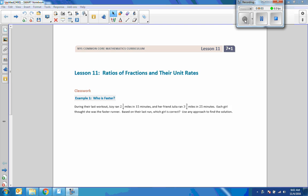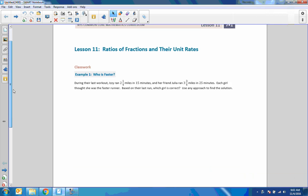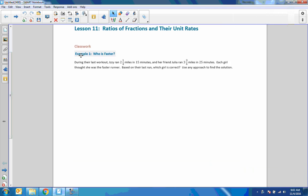Hi there, Mr. Holcomb here with another episode of the math behind the module. All right, this is lesson 11, ratios of fractions and their unit rates. Classwork example one, who is faster? During their last workout, Izzy ran two and one quarter miles in 15 minutes. And her friend Julia ran three and three quarter miles in 25 minutes. Each girl thought she was the faster runner. Based on their last run, which girl is correct?